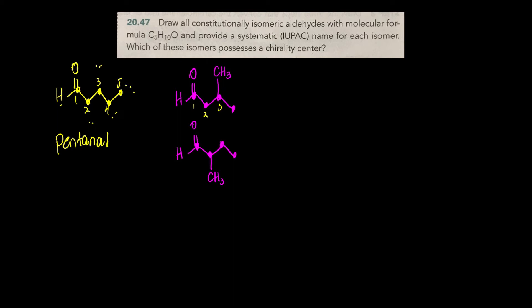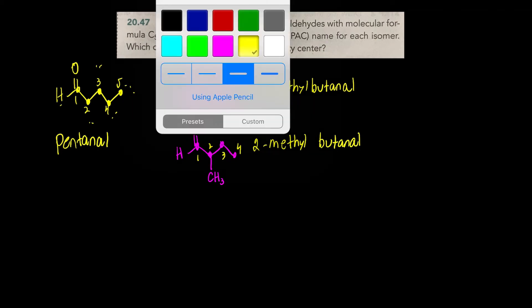Again, remember that the aldehyde is always positioned at carbon one. So this would be called 3-methylbutanal. Butane means four carbons, and we don't need a number for the aldehyde. And this would be called 2-methylbutanal.